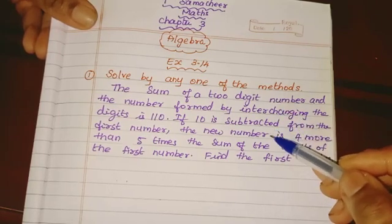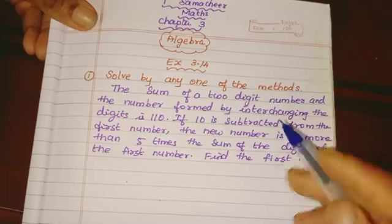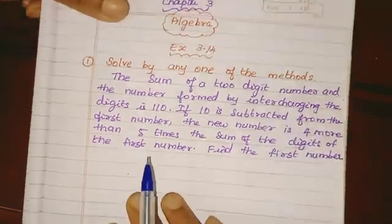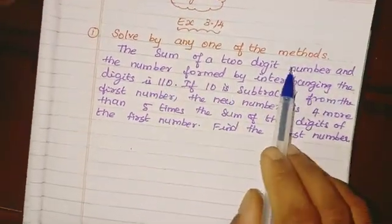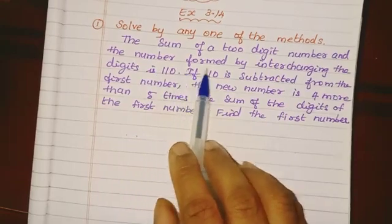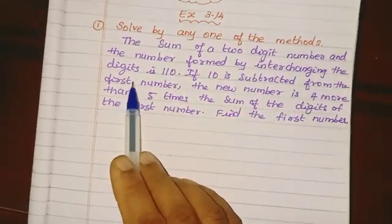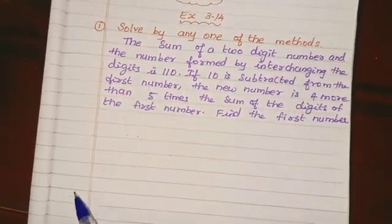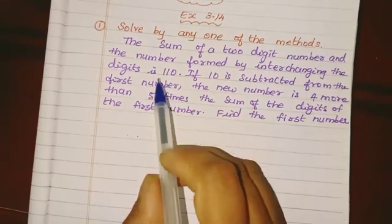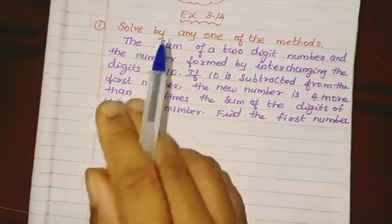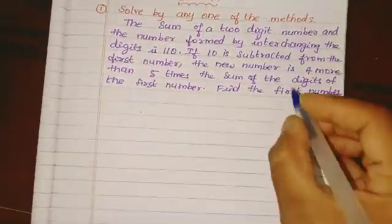In the three methods, we choose one method to solve. The question is: sum of a two-digit number and the number formed by interchanging the digits. First statement method: sum of a two-digit number.